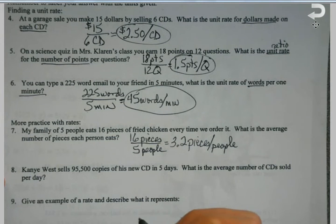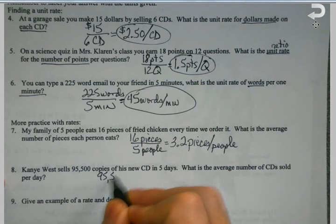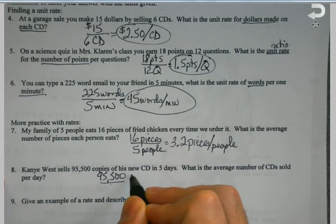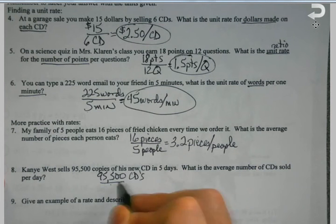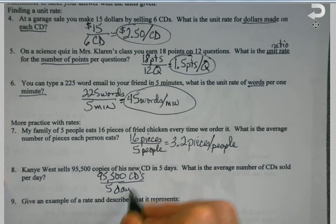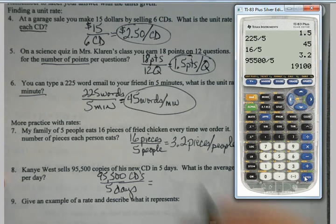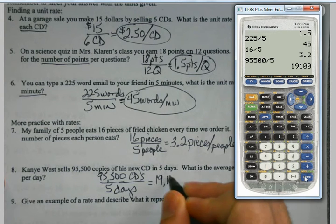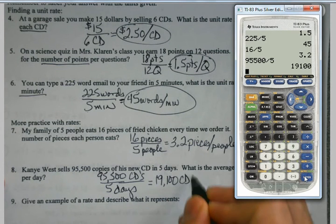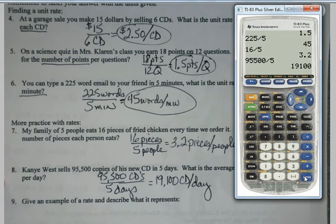Kanye West sells 95,500 copies of his new CD in five days. All I'm going to do is do the division. This time it comes out nice. 19,100 CDs per day. It's just staying in that order of things.